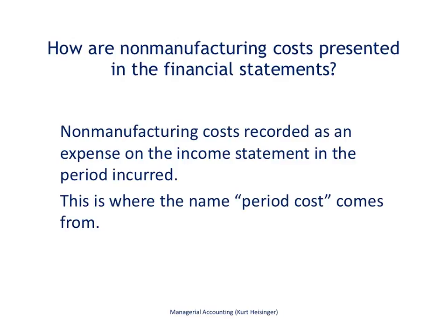The general and administrative category includes costs associated with areas such as accounting or human resources — the cost of employees in those departments, the buildings they are in, the computers they use, and maintaining those buildings. Non-manufacturing costs are recorded as an expense on the income statement in the period in which the cost is incurred, which is exactly why they are called period costs. Unlike manufacturing costs, they are not held in inventory — they are expensed immediately as incurred.